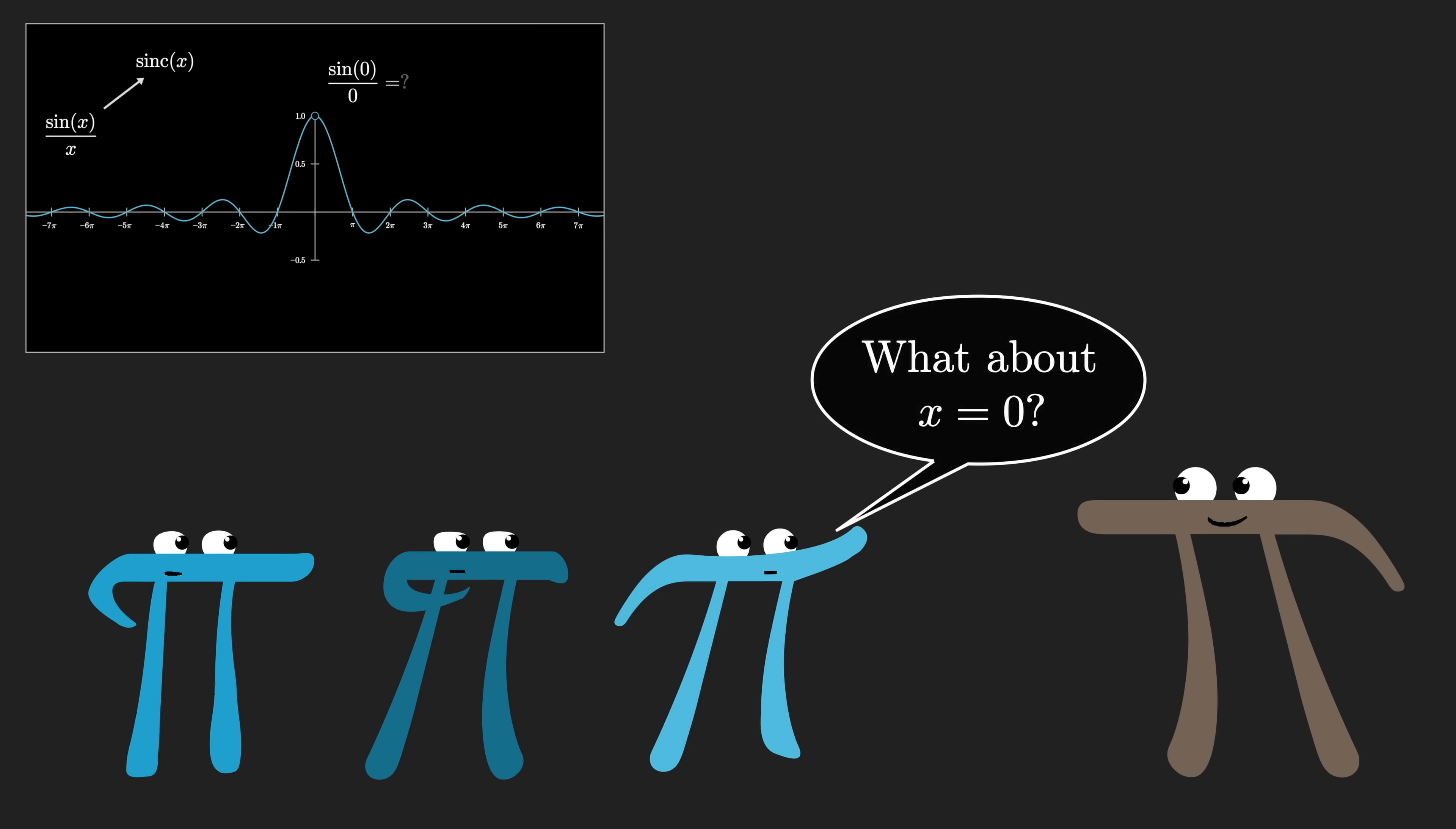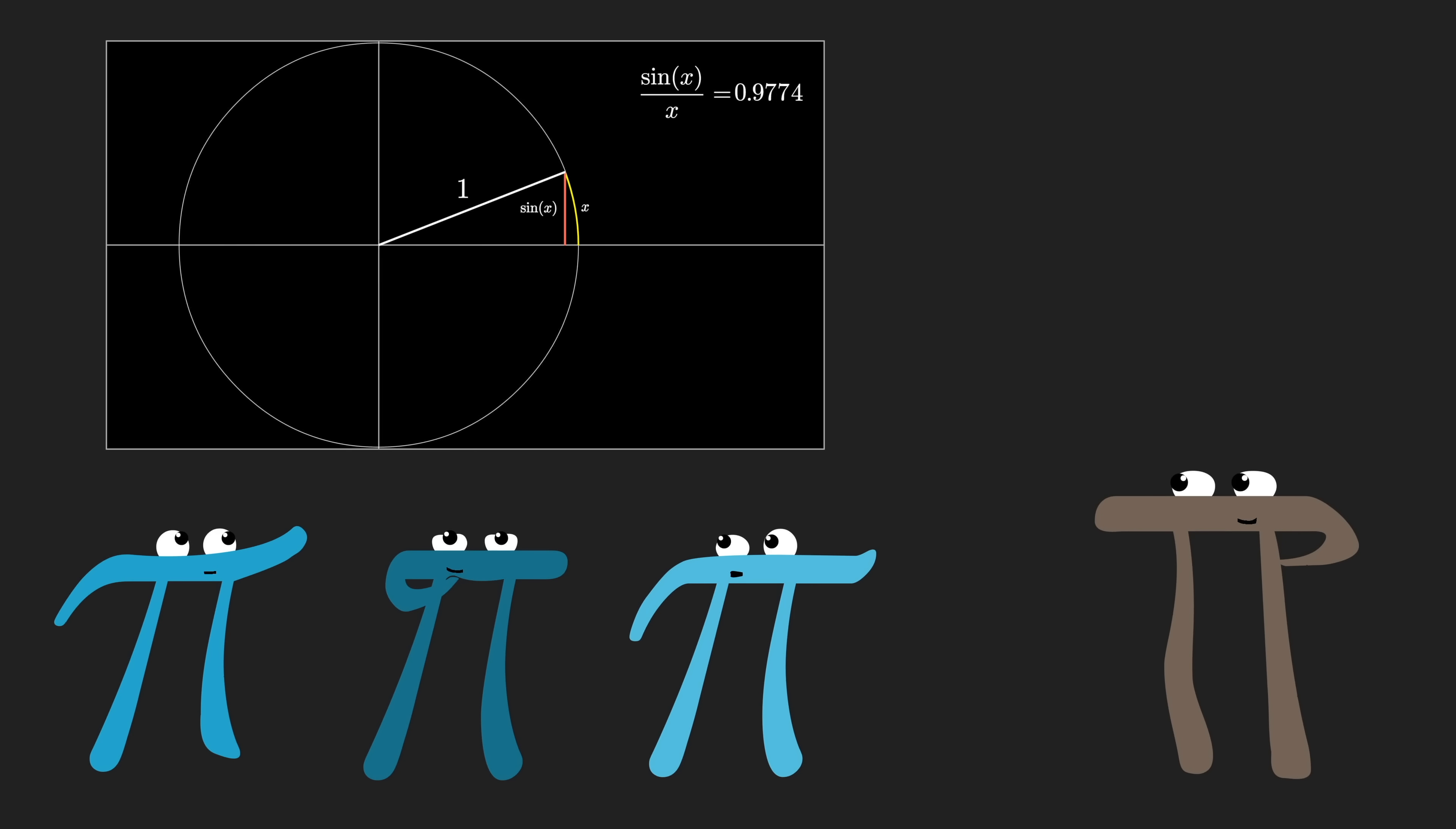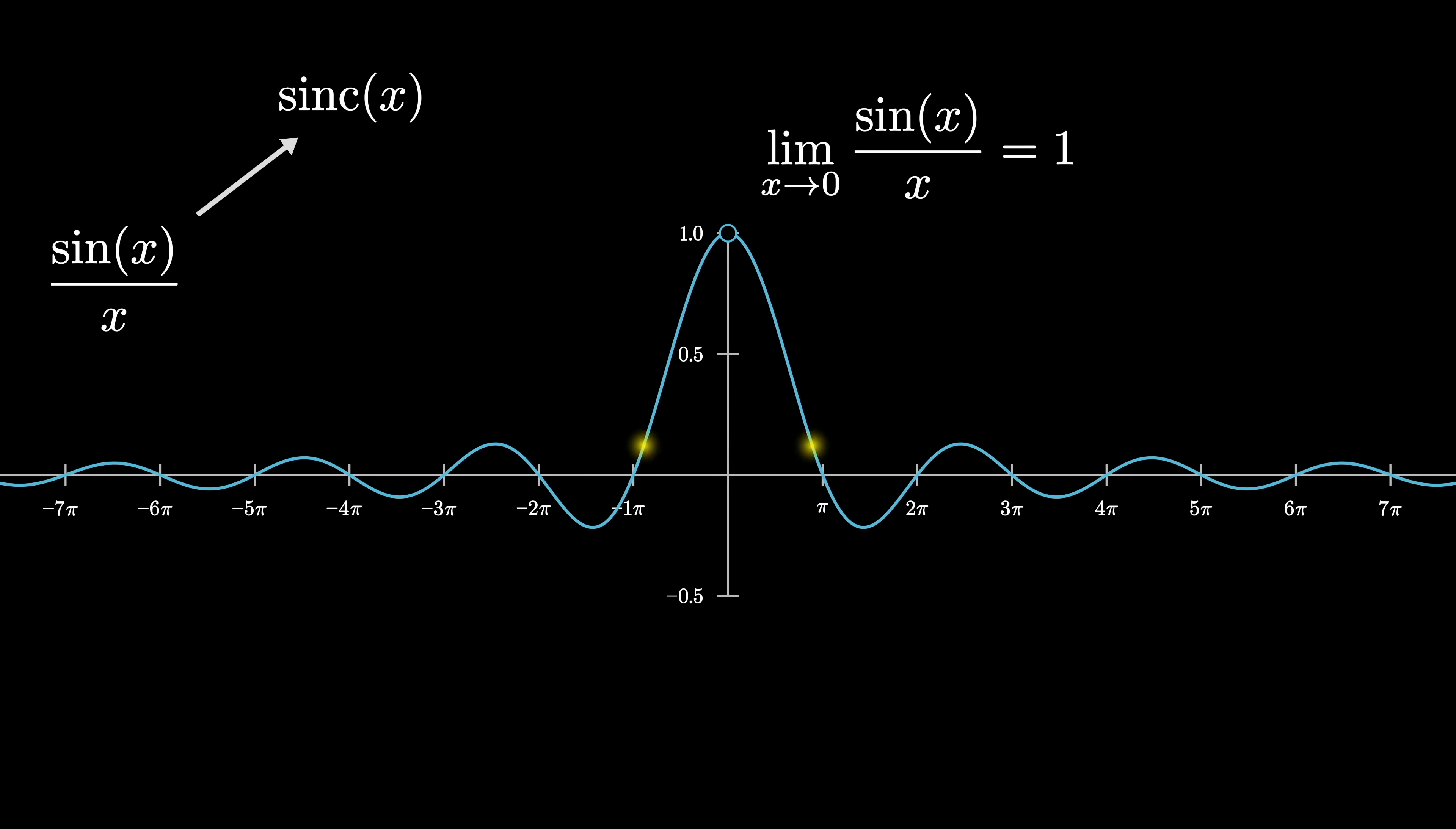And the astute among you might ask about what happens at x equals zero, since when you plug that in, it looks like dividing zero by zero. And then the even more astute among you, maybe fresh out of a calculus class, could point out that for values closer and closer to zero, the function gets closer and closer to one. So if we simply redefine the sinc function at zero to equal one, you get a nice continuous curve.